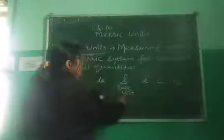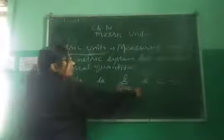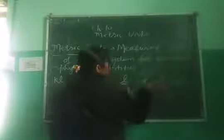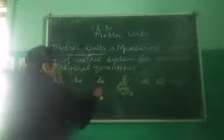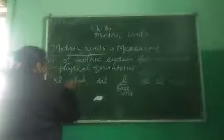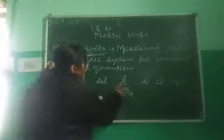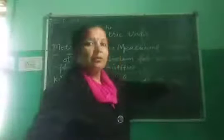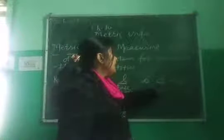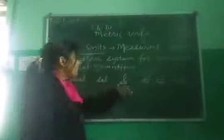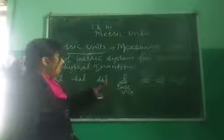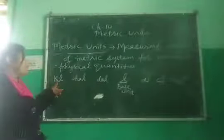If we are taking base unit as liter, then this will be called milliliter, centiliter, deciliter, and decaliter. If the base unit is gram, then this will be milligram, centigram, decigram, gram, decagram, hectogram, and kilogram.